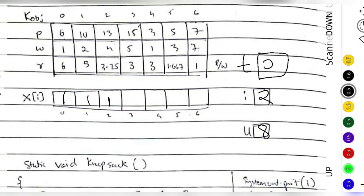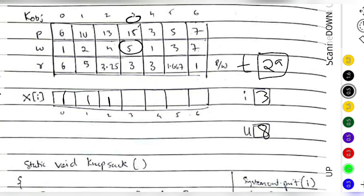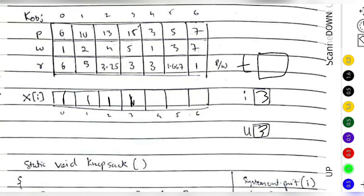i increments to 3. The object has weight 5. Is 5 greater than 8? No, so we can accommodate it. Remaining capacity is 8 minus 5, which is 3. We mark object 3 as included. The profit from object 3 is 15, so total profit becomes 29 plus 15, which is 44.